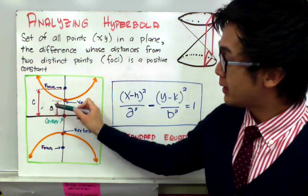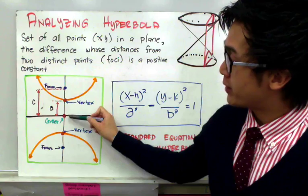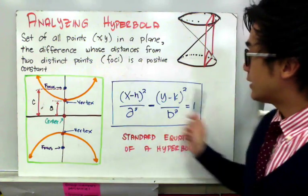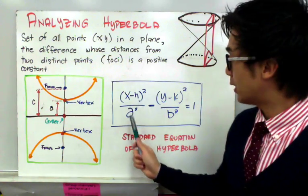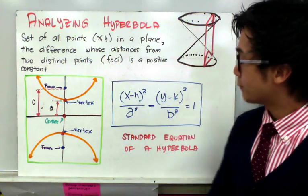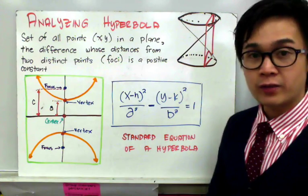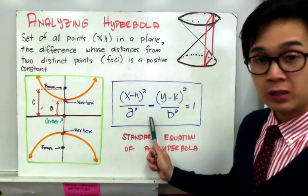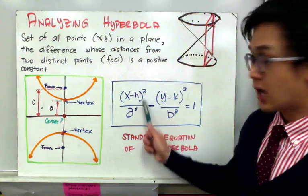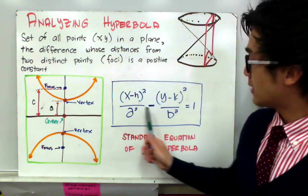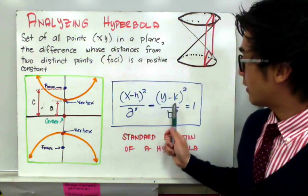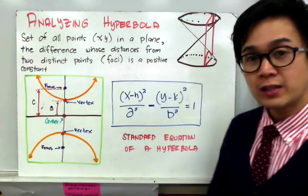To help us find the value of B, we will use the distance from the center to one of the foci, which is your letter C. The standard equation of your hyperbola is x minus h squared all over a squared minus y minus k squared all over b squared equal to one. This formula looks like your formula for an ellipse — the only difference is the sign. For an ellipse it was x plus y equal to one; for a hyperbola it is x minus y equal to one.